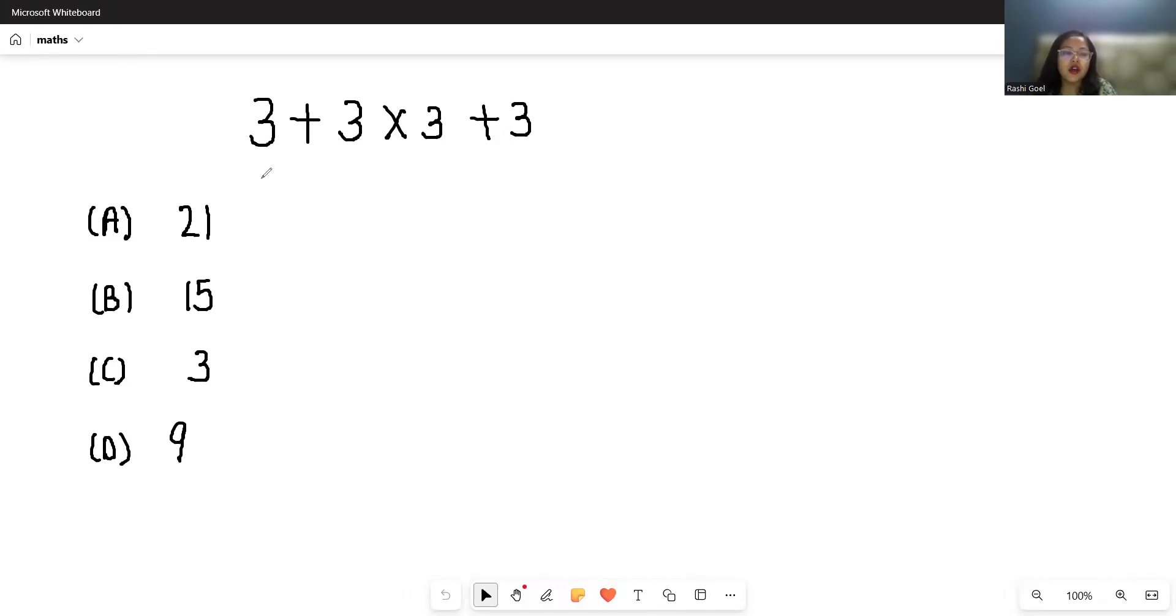Let's simplify this. Many people solve it like this: 3 + 3 is 9, 9 × 3 plus 3... 9 × 3 is 27, plus 3 is 30, which is the incorrect way to solve.